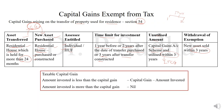Now, let's see how to calculate the taxable capital gain. The amount invested is nothing but the cost of the new asset. If the cost of the new asset that is purchased or constructed is less than the capital gain, then: taxable capital gain = capital gain minus amount invested. For example, the capital gain is 5 lakh rupees and the amount invested, that is the cost of the new asset, is 2 lakh rupees. Since the capital gain is more and amount invested is less, the taxable capital gain will be 5 minus 2 = 3 lakhs.